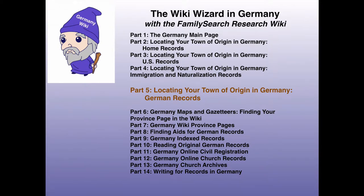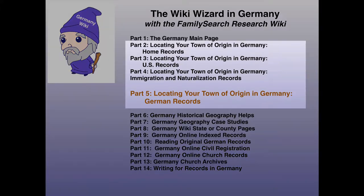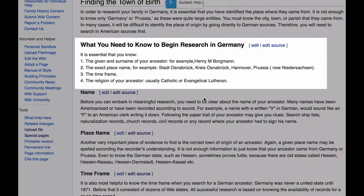This is the fifth lesson in a series to teach you how to use the FamilySearch Research Wiki to locate records about your ancestors who lived in Germany. The lessons in Parts 2-5 are meant to help you find clues about the town your ancestors lived in in Germany, a vital piece of information. In order to match the information you have on the person in the United States to the correct person in the records of Germany, you need to find the full name of your ancestor, the exact place name of the town he lived in, the time frame you're looking for records, and the religion.